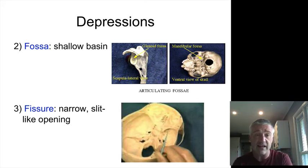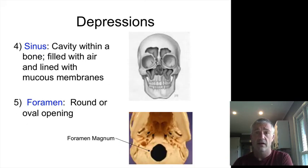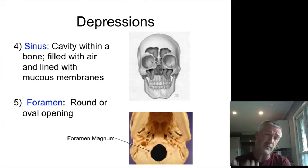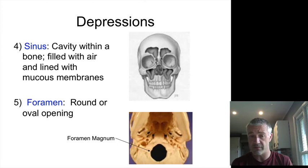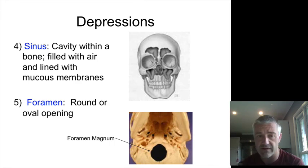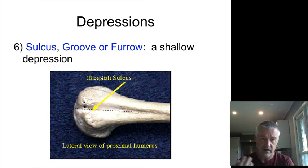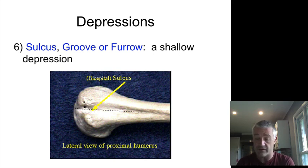A fissure is a slit-like opening. Sinuses are holes within the bone — for example the frontal sinus in the frontal bone. Openings that allow a blood vessel or nerve to pass through are referred to as foramina, and we talk about a lot of these with the skull — the foramen magnum being the largest one, but we also have the mental foramen where a nerve comes out. A sulcus, or groove or furrow, is a shallower depression than a fossa — you can see a sulcus on the humerus, for example.